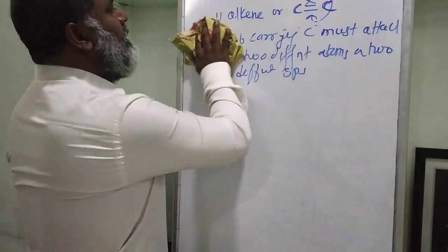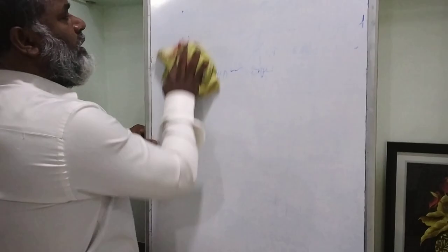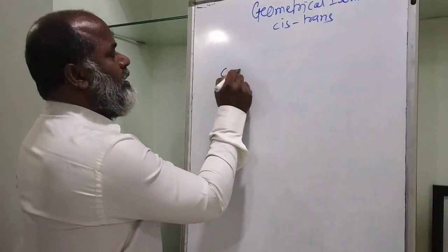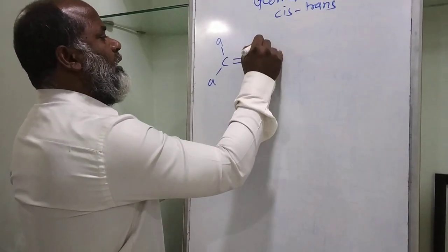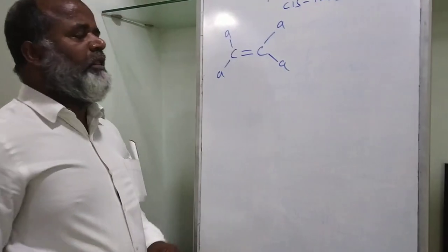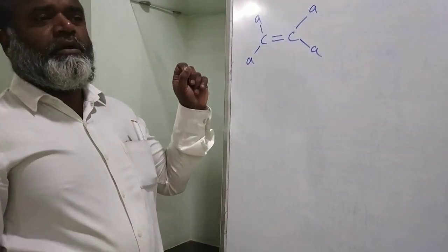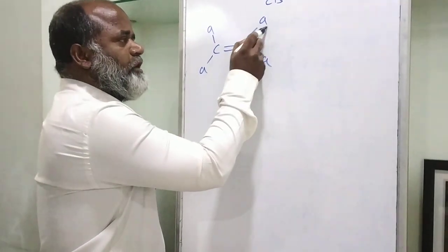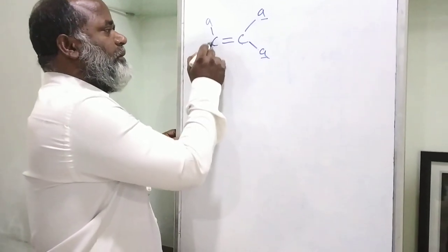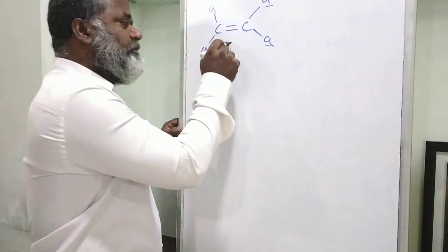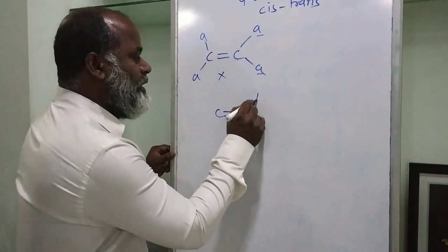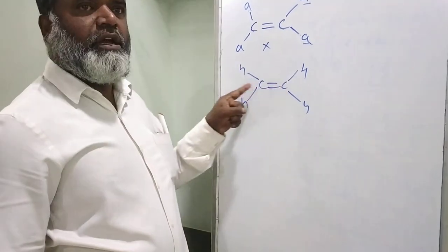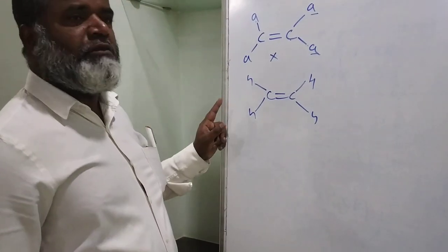Let's write some molecules and check whether they show geometrical isomerism. First example: C double bond C with A, A on one carbon and A, A on the other. Condition one is satisfied — there is a carbon-carbon double bond — but condition two is not satisfied because this carbon is attached to two identical atoms (A and A). For example, ethylene, the first member of the alkene family, will not show geometrical isomerism.